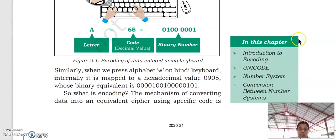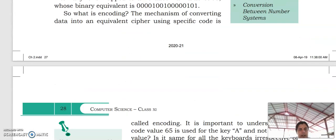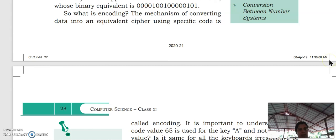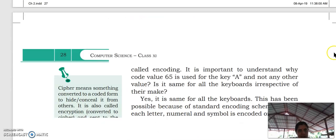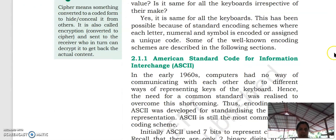So we discussed encoding. Encoding means we are converting our input into some specified code. This specified code is hidden to the user — this is known as cipher. This mechanism is known as encoding. The mechanism of converting data into an equivalent cipher is known as encoding.